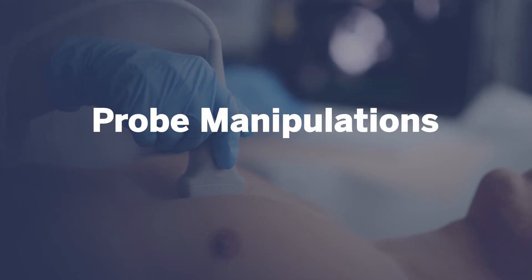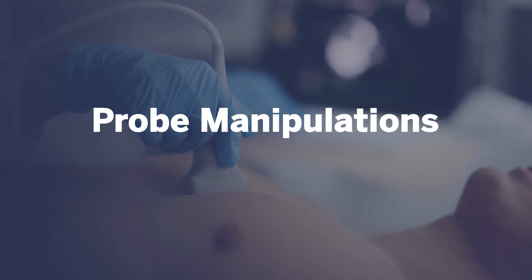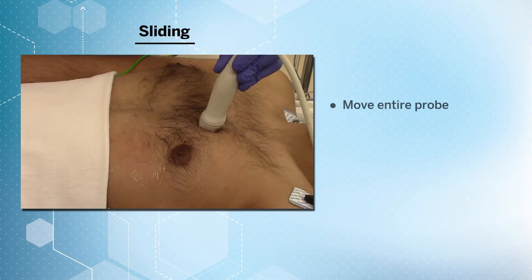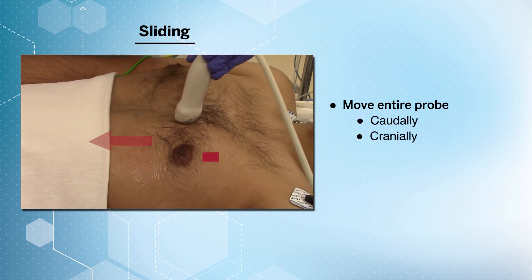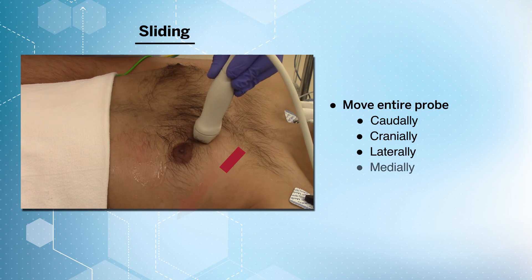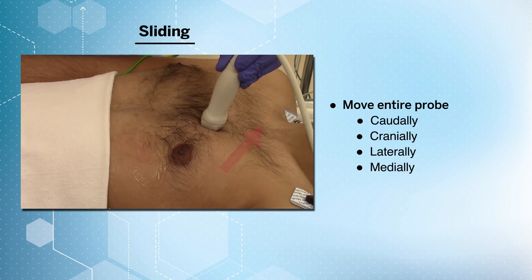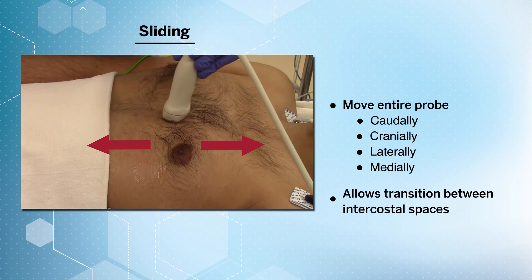Moving on to probe manipulations — there are four cardinal probe motions we need to be aware of in order to help obtain and optimize our images. Sliding the probe involves moving the entire probe in a specific direction, either caudally, cranially, laterally, or medially. This motion is often done to transition between intercostal spaces.